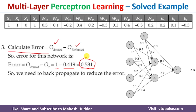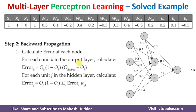If you are happy with this particular error, there is no need to do anything — you can stop training this multi-layer perceptron network and deploy it in the real world. But if you are not happy with this error term, we need to propagate this error backwards and update the weights so that we can reduce the error. The question is: how can we propagate this error backwards?